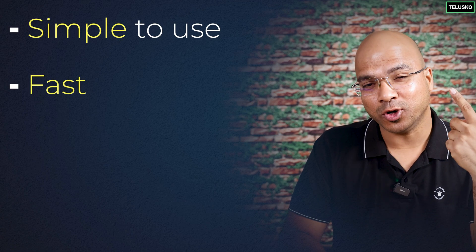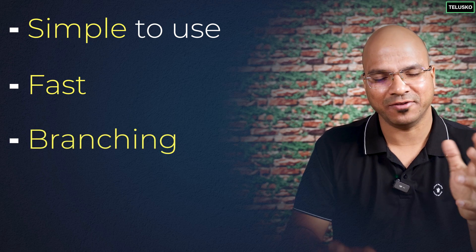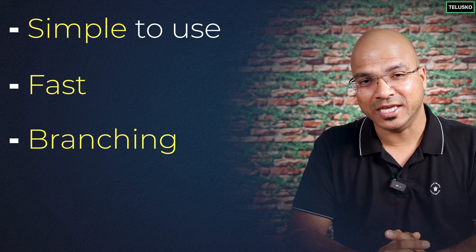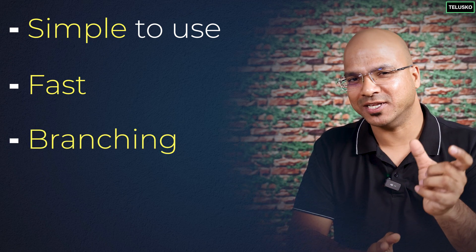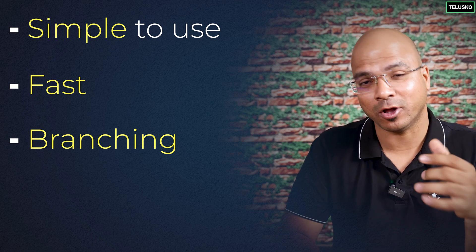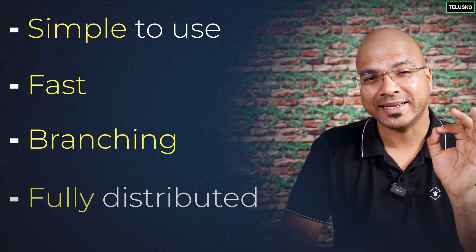Git is different from all other version control systems, even from Bitkeeper, and because it is different, it has some amazing features. It is very simple to use, it is fast, and it also allows something called branching — once we get to the advanced part, we'll understand what branching means, and it's a fun concept to learn and implement. It is also fully distributed, which makes Git very famous.